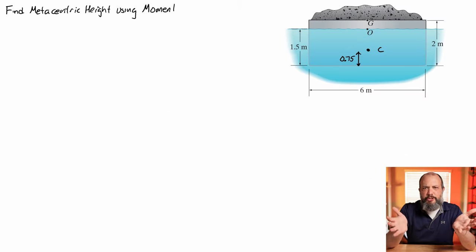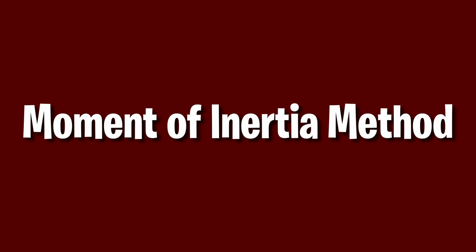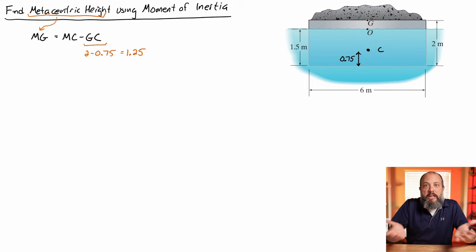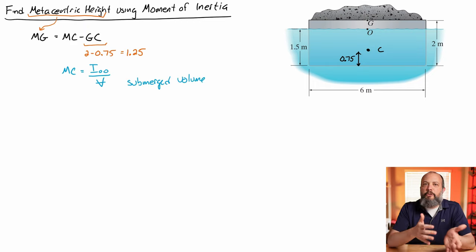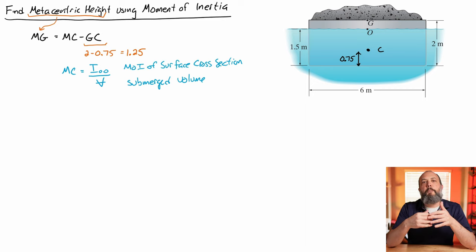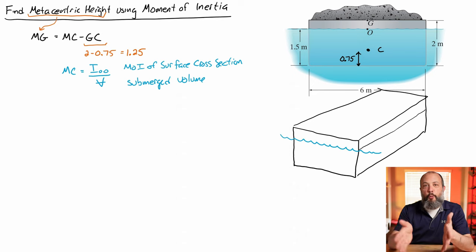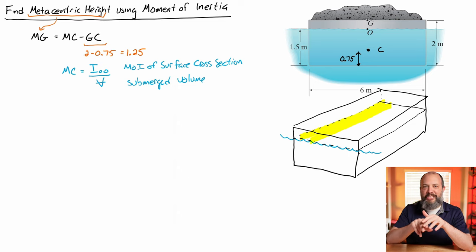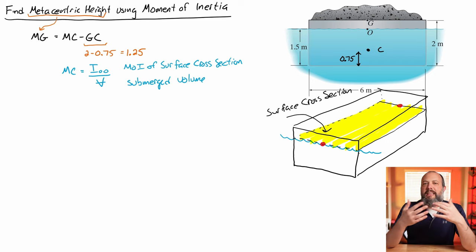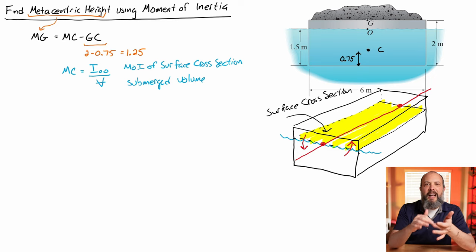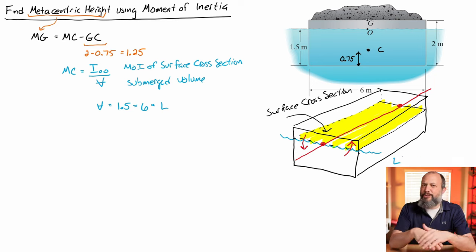That was pretty complicated — calculating centroids of trapezoids, nobody likes doing that. There is a shortcut which for some common shapes is actually pretty easy. Setting aside the nine-degree slope and just considering the barge in its regular horizontal position, you can find the distance from the center of buoyancy to the metacenter using the moment of inertia of the cross-sectional shape of the water. You can look up a derivation for that in the textbook, but I'm going to skip that.